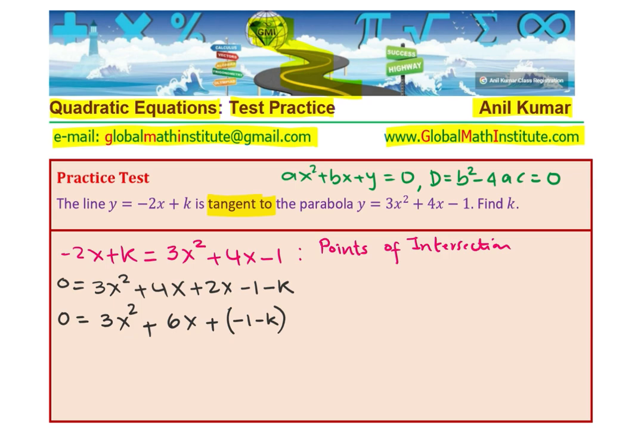So we want b² - 4ac. Here what is a? The value of a is 3. The value of b is 6, and the value of c is -1 - k.